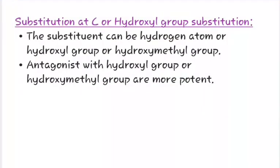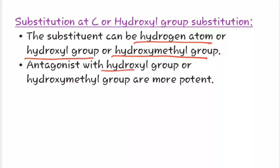At last, we will study about substitution at C, or hydroxyl group substitution. At the C position, the substituent can be a hydrogen atom, hydroxyl group, or hydroxymethyl group. Antagonists with a hydroxyl group or hydroxymethyl group are more potent.